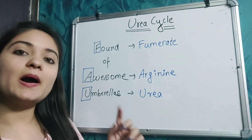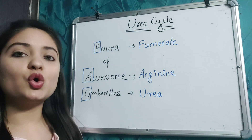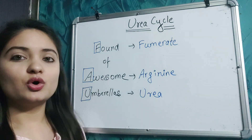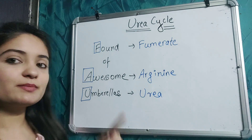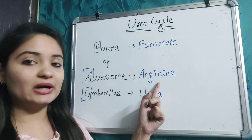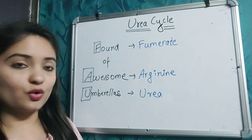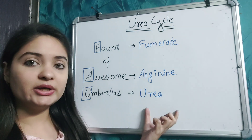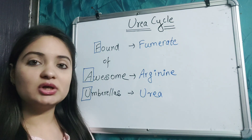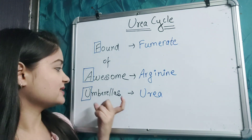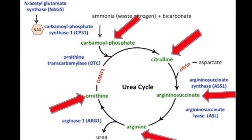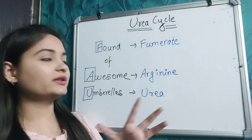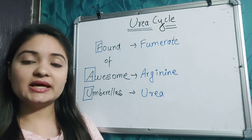The next word is 'Fond' — the first letter F correlates to Fumarate, which is an intermediate in the urea cycle. 'Awesome' — the first letter A correlates to Arginine, another intermediate. The last intermediate is Urea. The last word in the trick is 'Umbrellas' — the first letter U tells us this is Urea. You can see red arrows on screen marking the intermediates. This is a very simple trick for urea cycle intermediates.